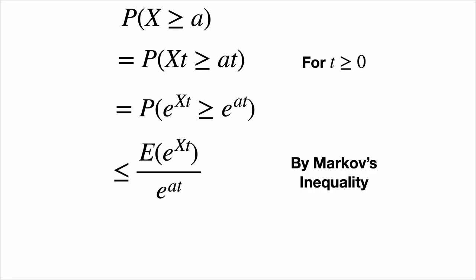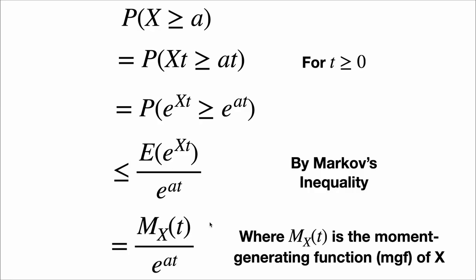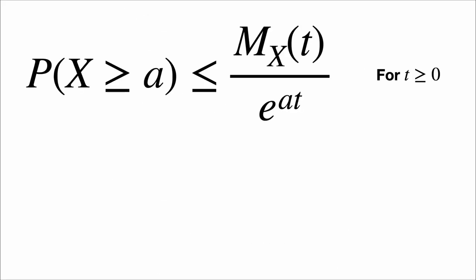Applying Markov's inequality, we get that the probability that x is at least a is less than or equal to the expected value of e to the xt over e to the at. That thing on top, which we'll call M_x(t), is just the moment generating function (MGF) of the random variable x. So the probability that x is at least a is less than or equal to the moment generating function evaluated at t divided by e to the at, for any t that's at least zero.